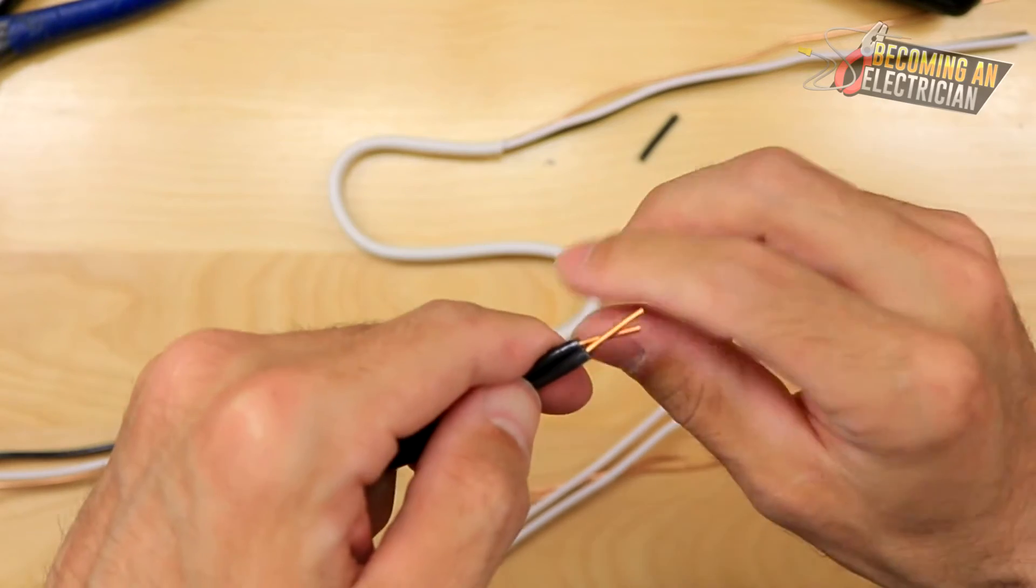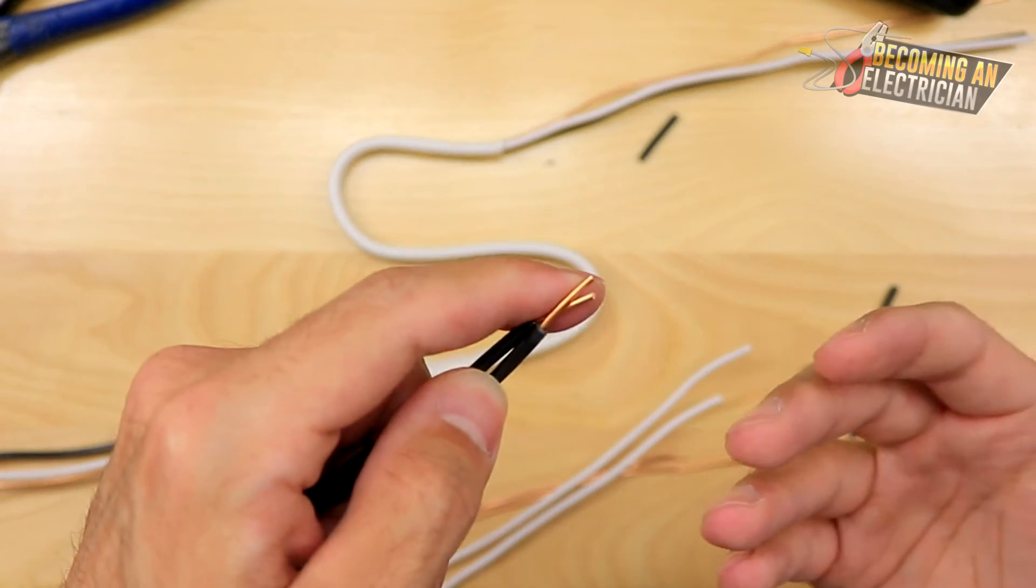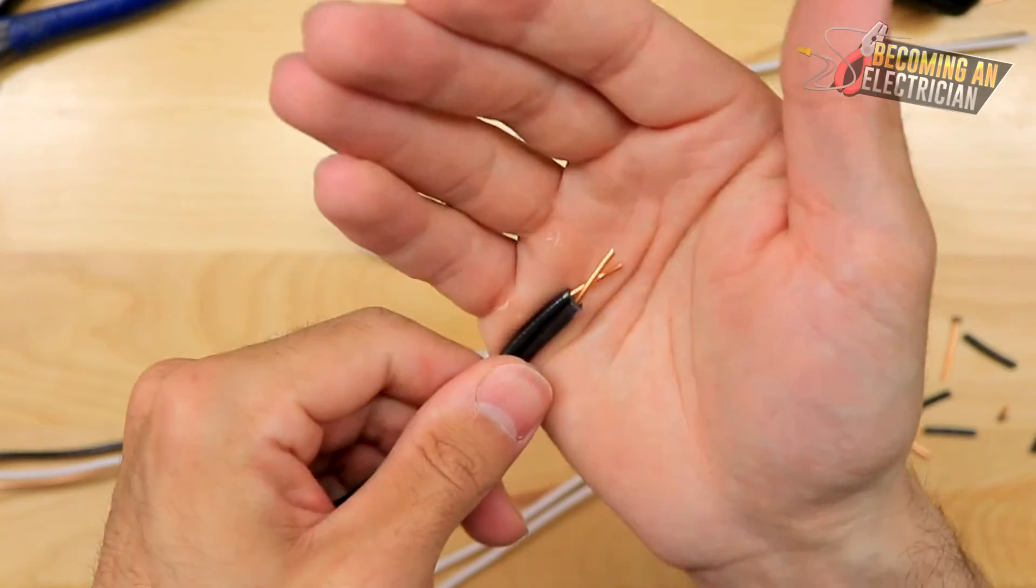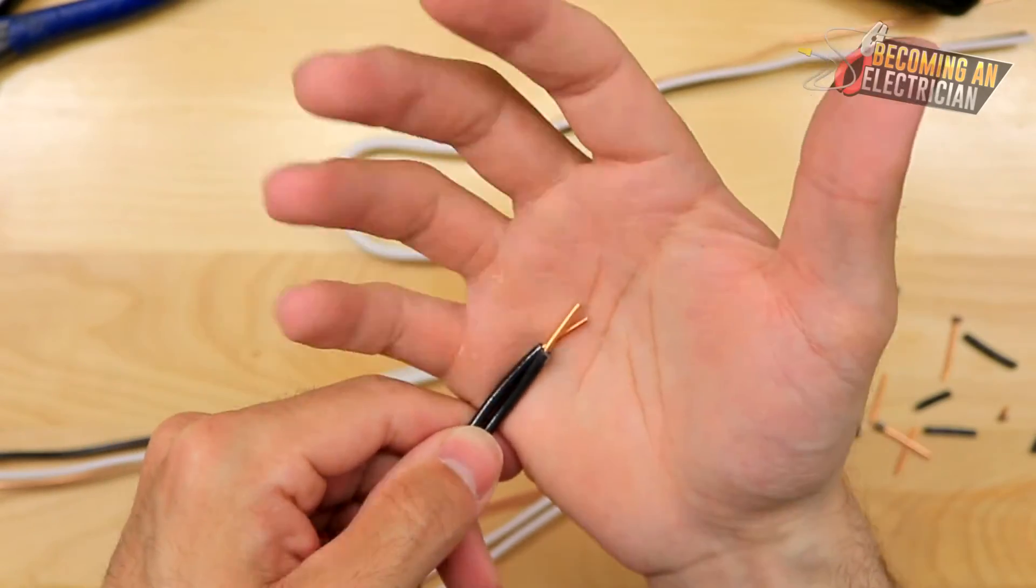Once you deal with 12 gauge wire and 10 gauge wire, it doesn't work like that. It's very—it's too big for our human hands.